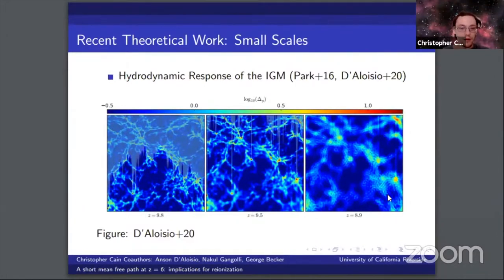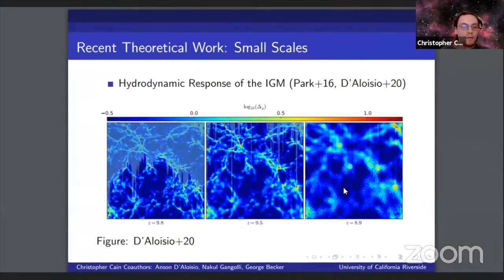As I've shown in this figure, the IGM evolves from a highly clumpy state with a very high recombination rate just after ionization. Over a timescale of a couple hundred million years, the IGM goes to a much more diffuse state with a lower recombination rate. This process is driven by photo heating from reionization.